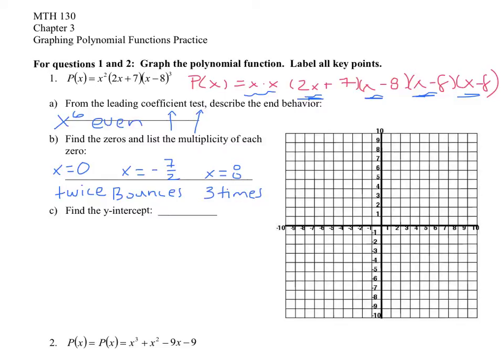Student: So the X twice — is that where the X squared comes in? Yes, X squared is X times X, so you get X equals zero for each X. And X cubed would give X equals zero three times.